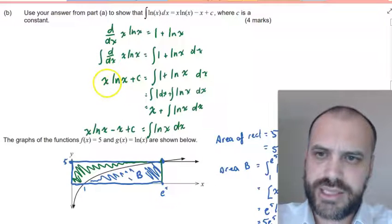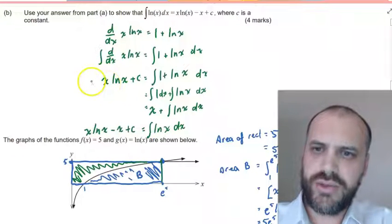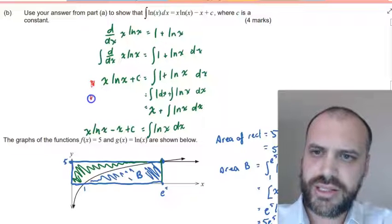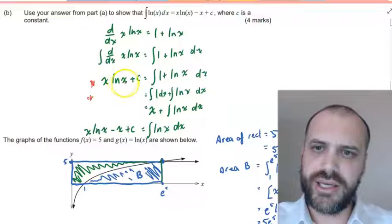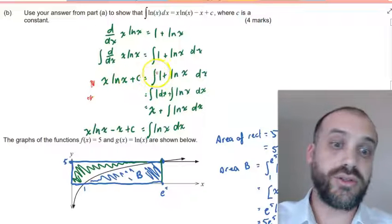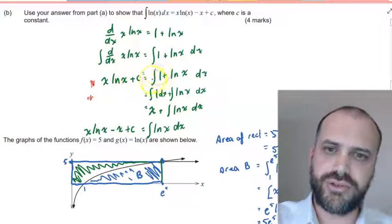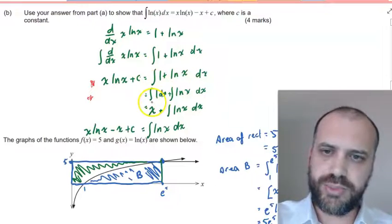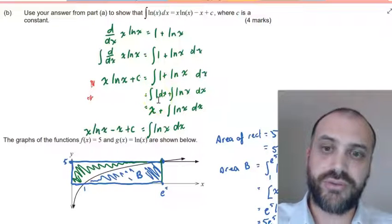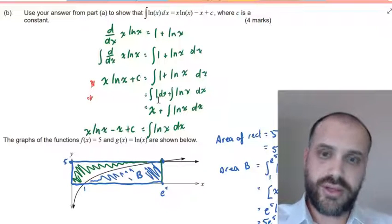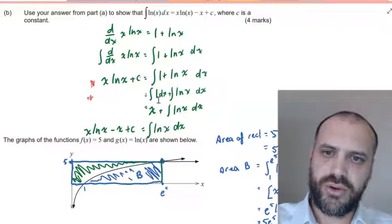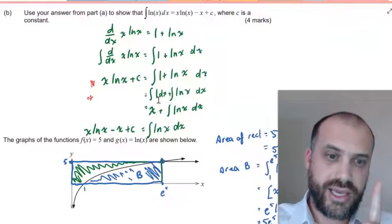It was part B that someone was a little confused about. I haven't made an error here, but I want to clear it up. The thing that someone was asking me about was in between this line here and this line here. On this left-hand side, I've got x lnx plus c equals, and then on the right-hand side, I've got the integral of 1 plus lnx. And I set that integral into the integral of 1 with respect to x and the integral of lnx with respect to x.